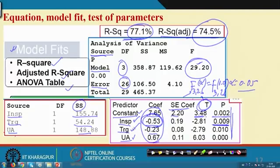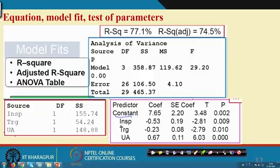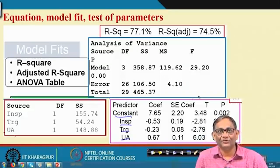Once the model is accepted, we test whether each parameter (coefficient) is significant. There are four coefficients: the intercept, and one for each of the three independent variables. The intercept is 7.65 with t = 3.48 and p-value = 0.002, indicating significance. Inspection has a coefficient of −0.53 with p-value = 0.009. All parameters including the intercept are significant, so the regression model is accepted for adequacy and from the parameter test point of view.